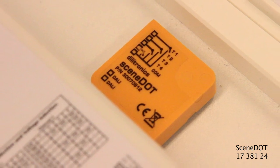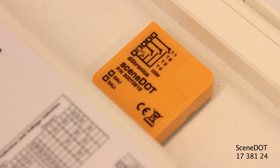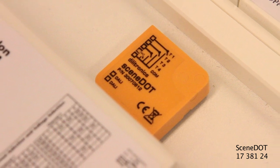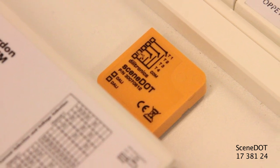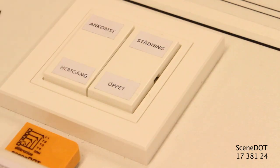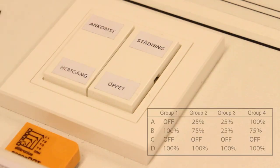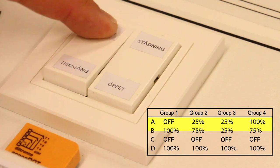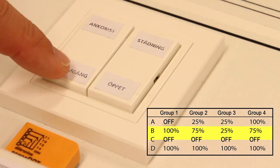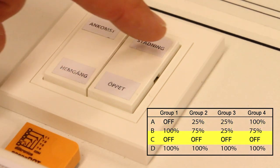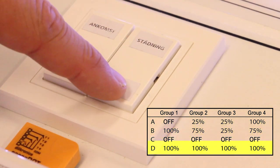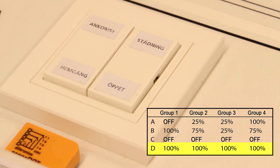Scene dot enables the function to store and recall up to four scenarios. Scene dot is an interface between a momentary push button and the DALI bus. Four buttons can be connected to the module, one for each scenario. For achieving the best results, using a four-channel low-volt switch is recommended.